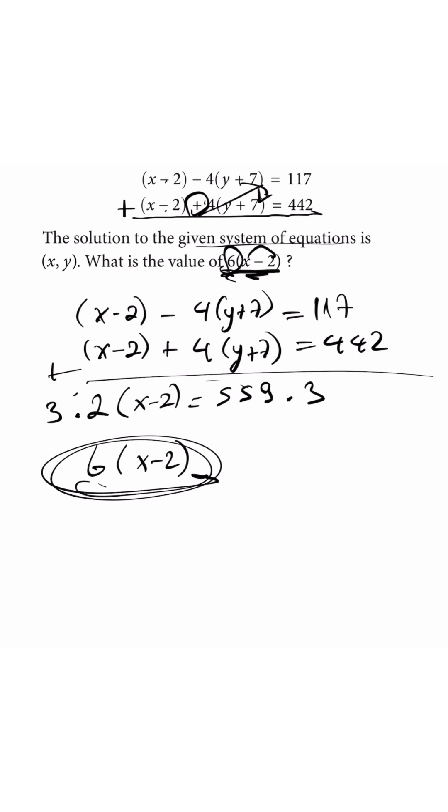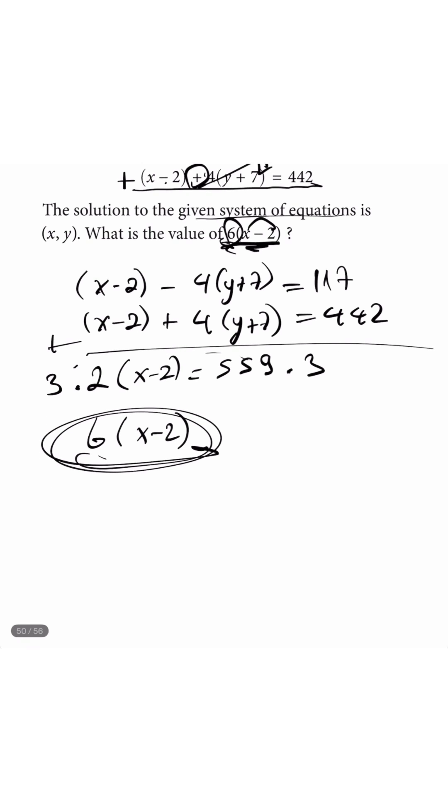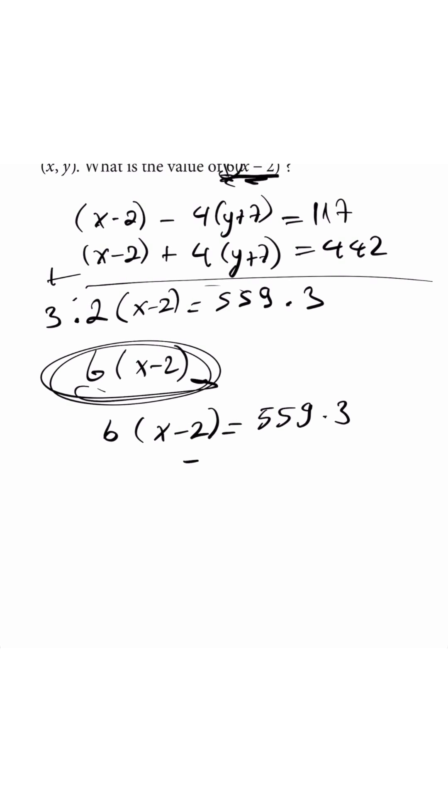So guys, 6 times x minus 2 equals to 559 times 3. So when we do the math, let's do that just real quick. Okay, 9 times 3 is 27, 15, 17, 1, 16. Okay guys, so the answer needs to be 16, 17, 17.